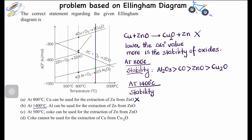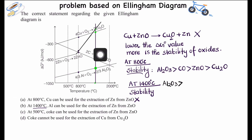At 1400°C, we identify the points on each curve: Al₂O₃, CO, Cu₂O, and ZnO. The approximate stability order at 1400°C is: Al₂O₃ is most stable, followed by CO, then Cu₂O, and then ZnO.